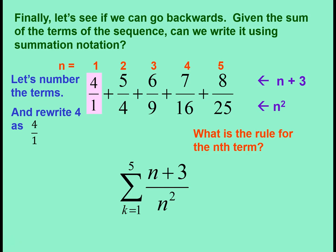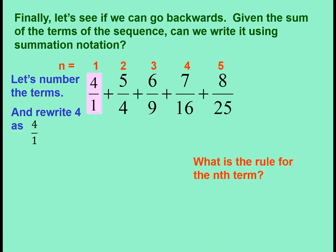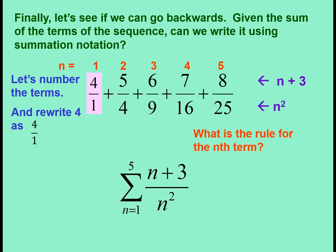So now the rule can be written as k equals 1 to 5. I got my k's and my n's mixed up again. This time I am going to stop. The sum as n goes from 1 to 5 of n plus 3 over n squared.